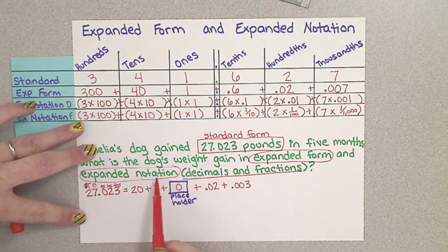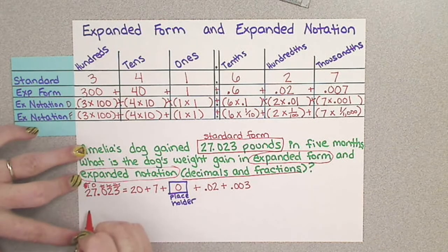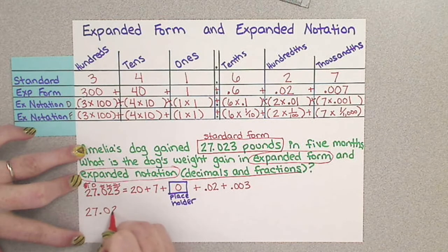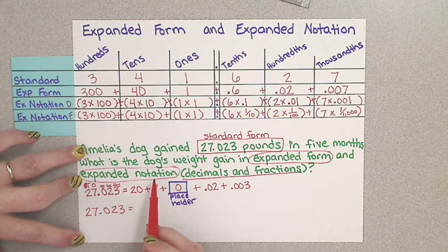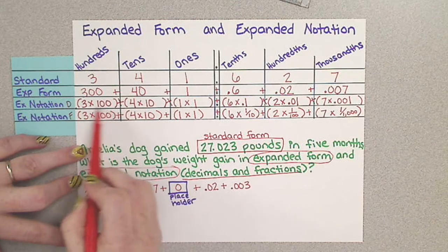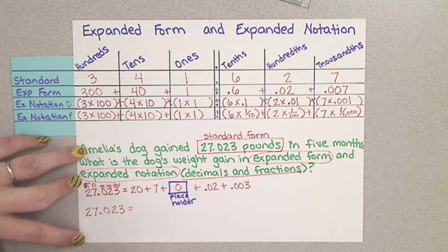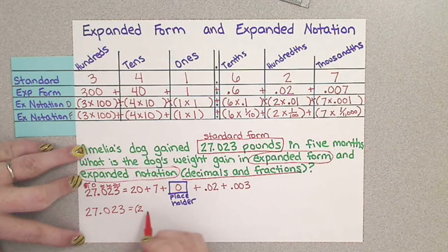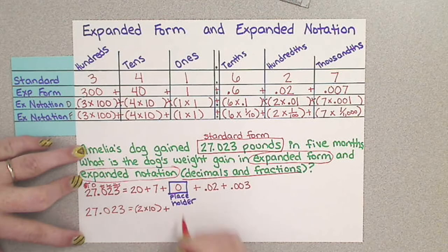Now we need to do this for expanded notation in decimals and fractions. Easy, not a problem. Again, I'm going to start with 27 and 23 thousandths. And remember, when you're looking at expanded notation, you're figuring out what computation you are needing to do to find the value. So there is a 2 in the tens place, so 2 times 10, plus 7 in the ones place, 7 times 1.